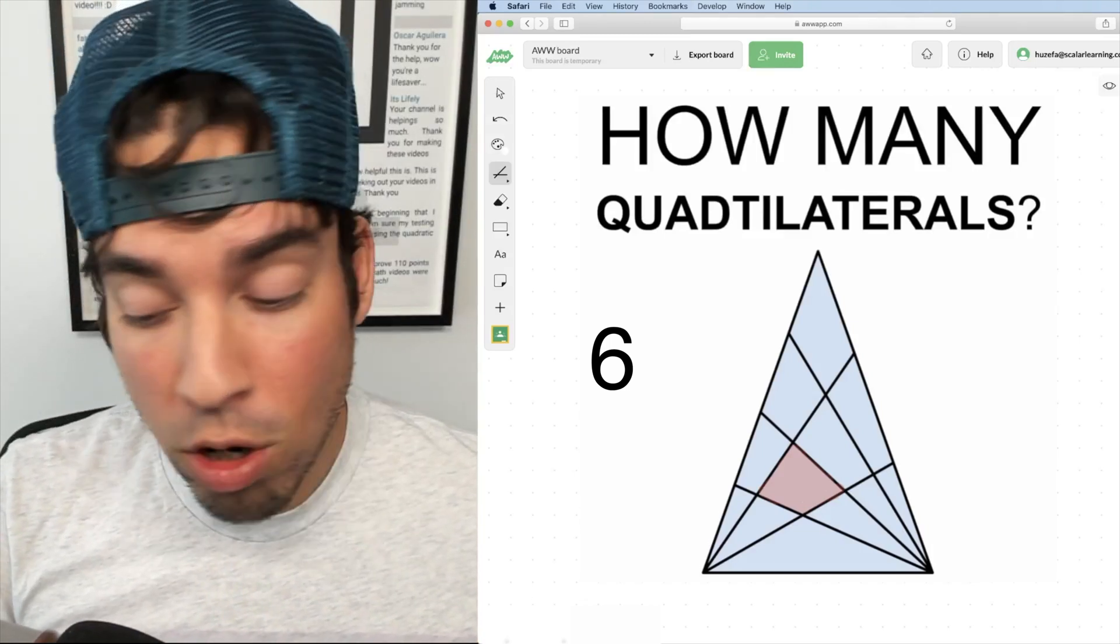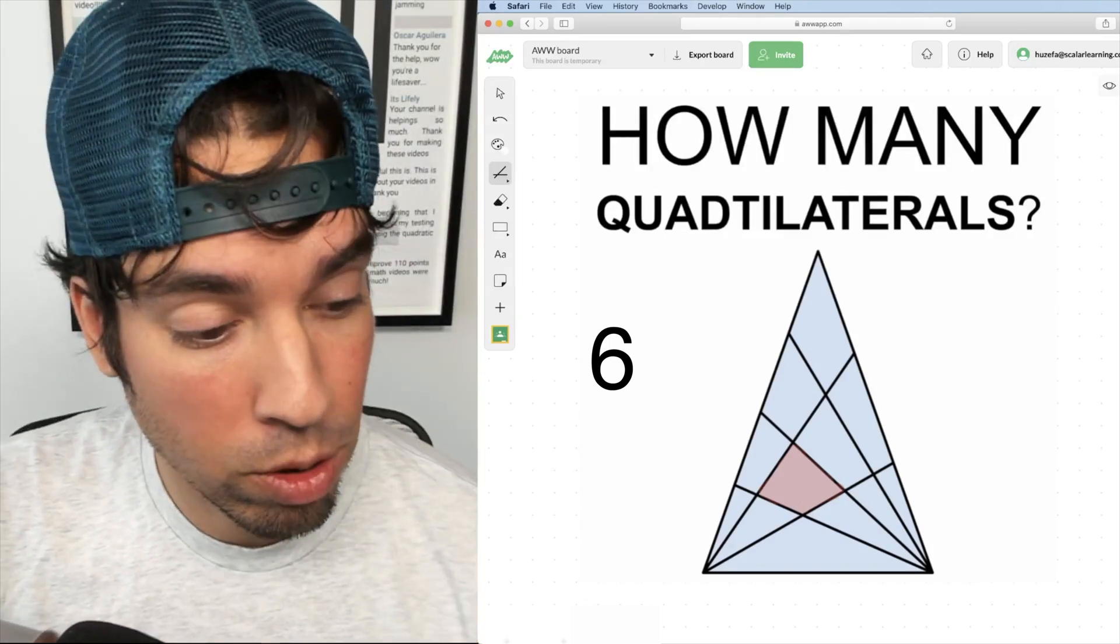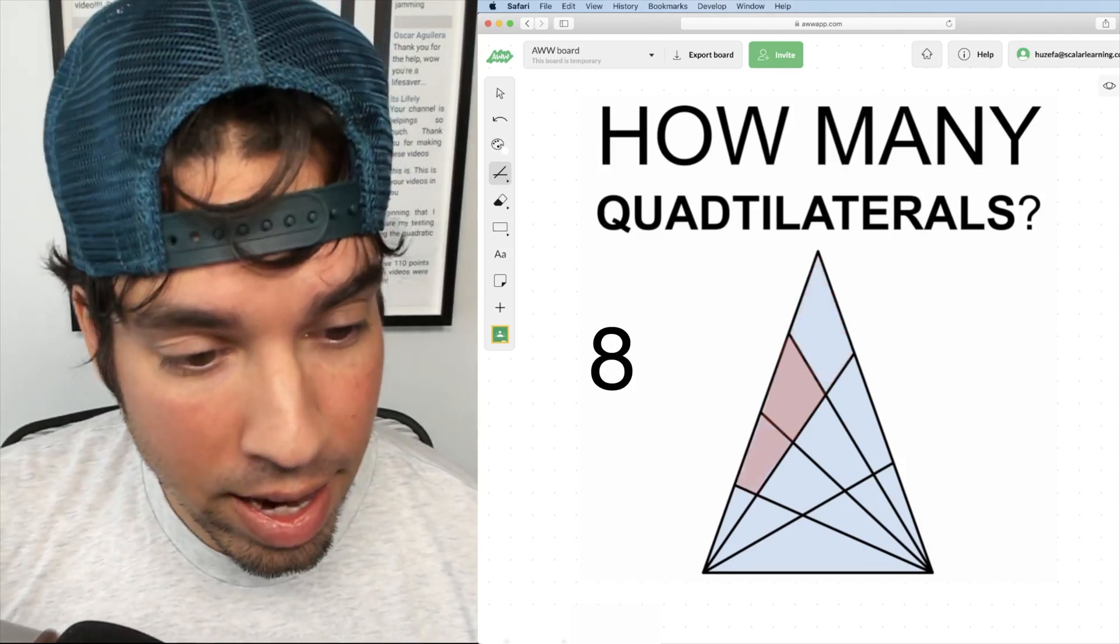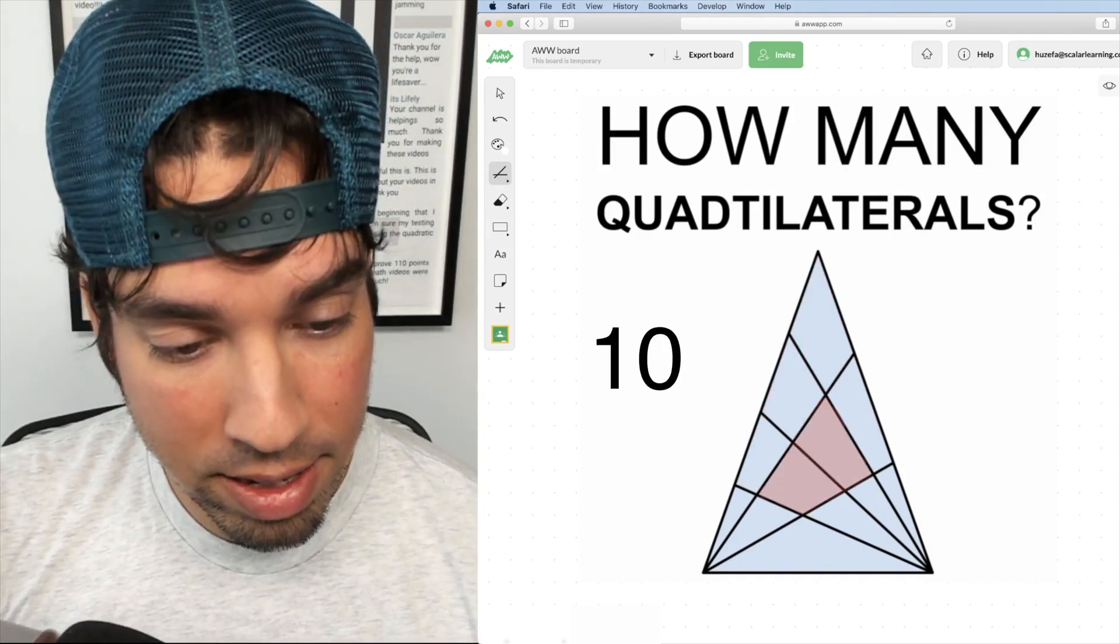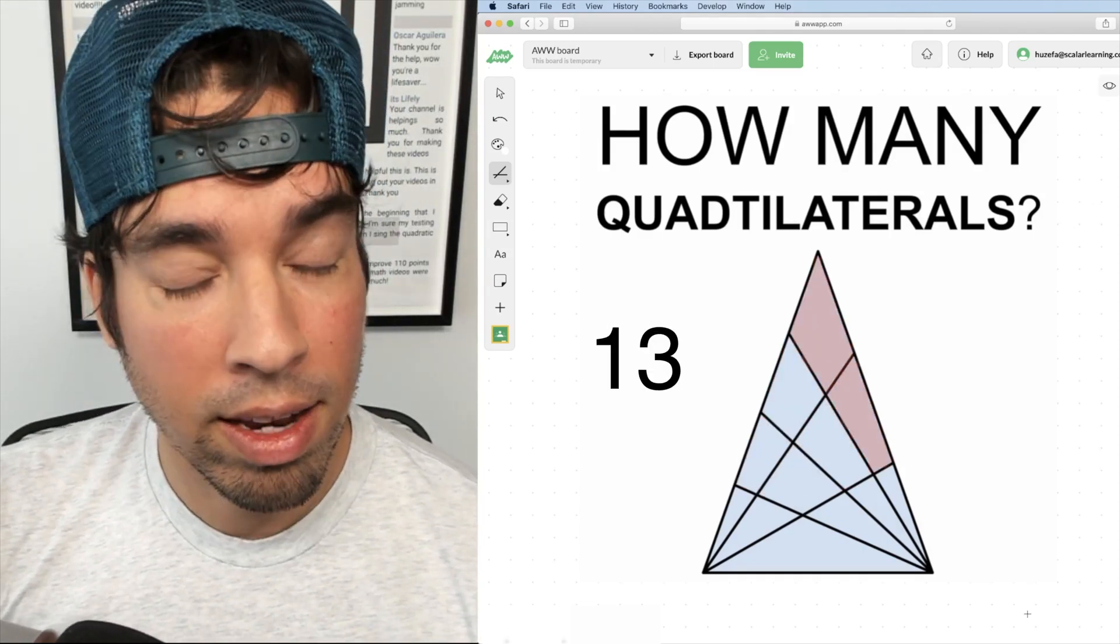Now we're going to go up to composite quadrilaterals comprising two shapes. So here we go. Seven, eight, nine, ten, eleven, twelve, and thirteen.